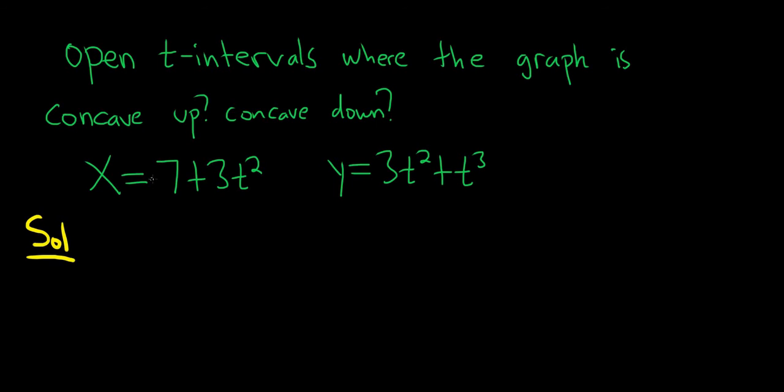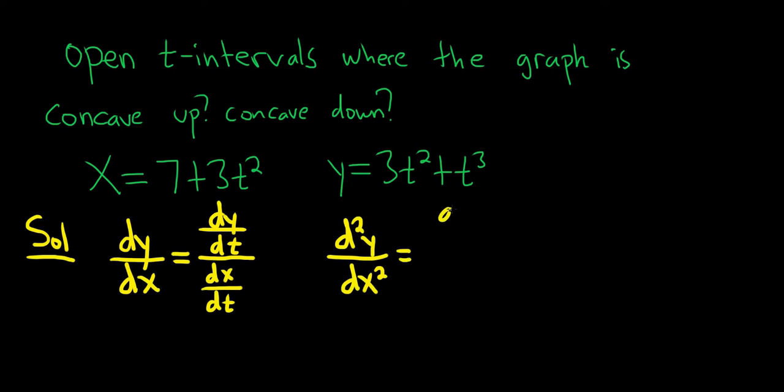So the second derivative is what's going to give us the concavity. We basically have to compute the second derivative and then figure out where it's positive and where it's negative. So the first derivative dy/dx is given by dy/dt over dx/dt. And then the second derivative uses the first derivative. So it's d²y/dx², and it's given by d/dt of the first derivative, so d/dt of dy/dx, and then on the bottom we have dx/dt. So a little bit funky, it takes some getting used to.